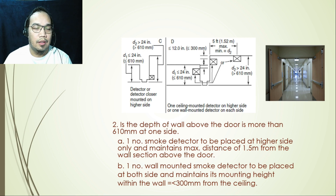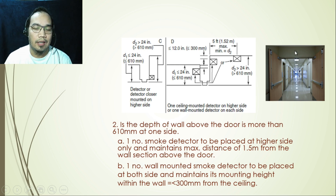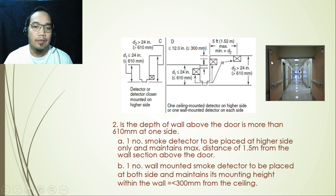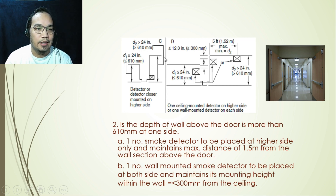The second case is when the depth of the wall above the door is more than 610 mm on one side only. This can happen when there are different ceiling levels on each side of the door — for example, one side has a ceiling height of three meters and the other side is only two meters. This creates a variation in the wall depth above the door. In this example, one side has a wall depth of only 610 mm while the other side is more than 610 mm.